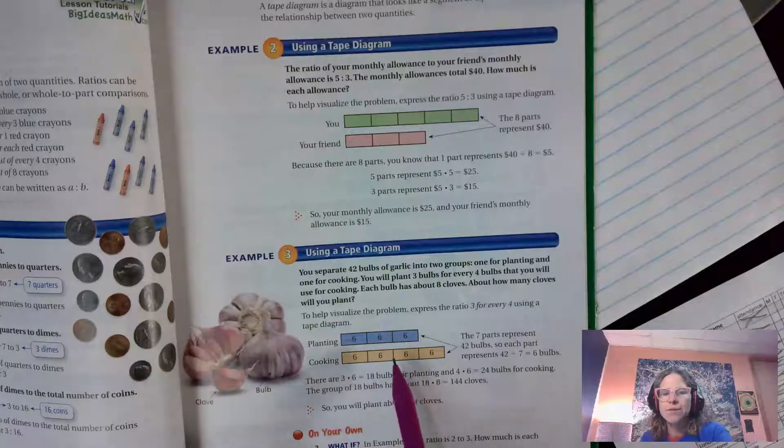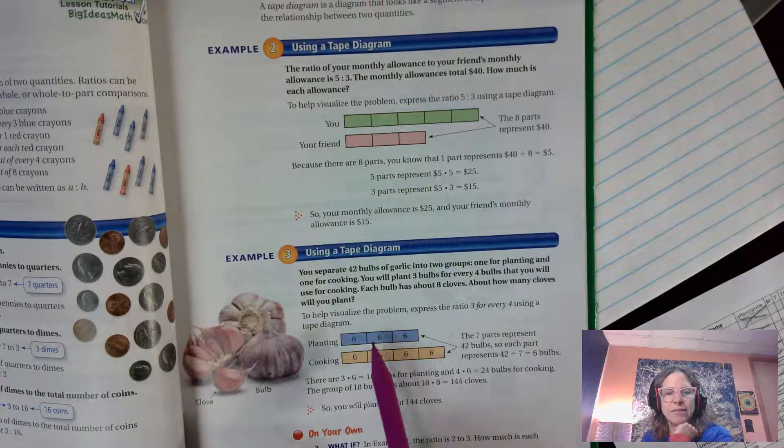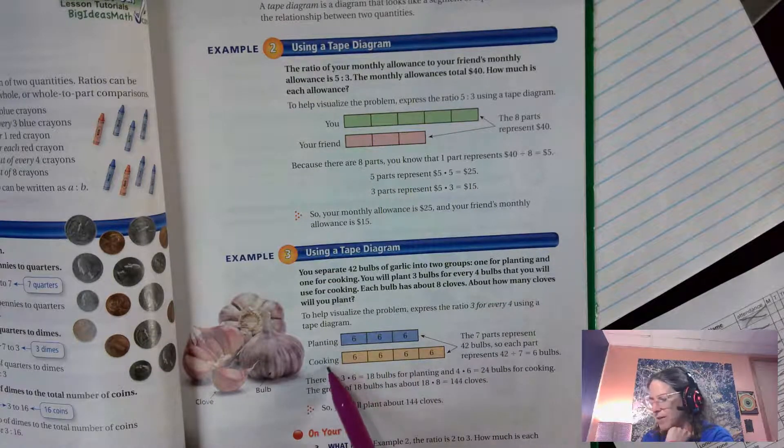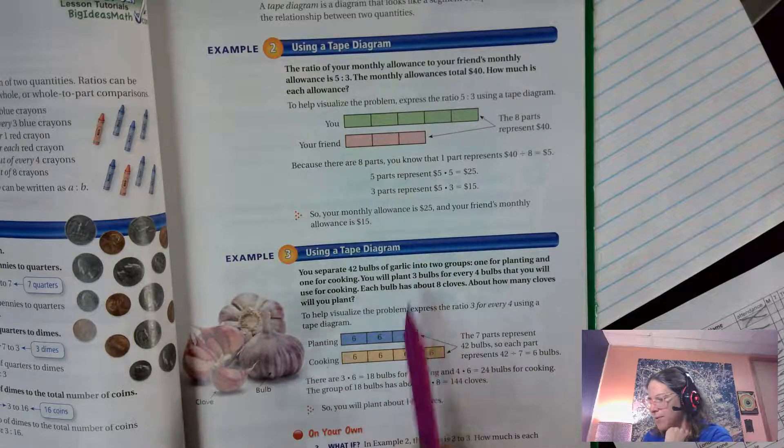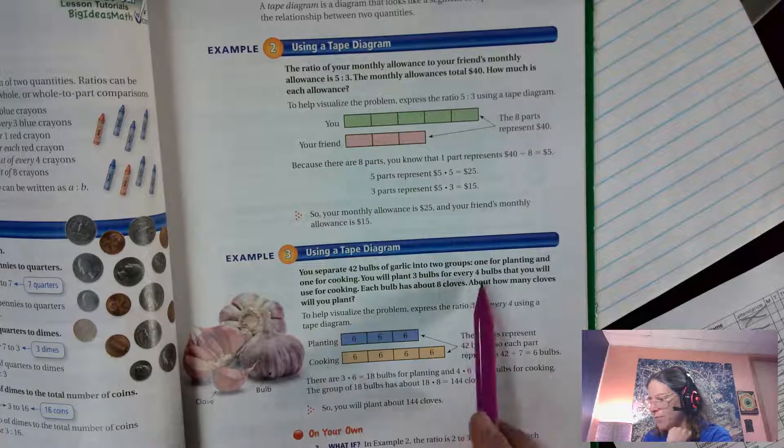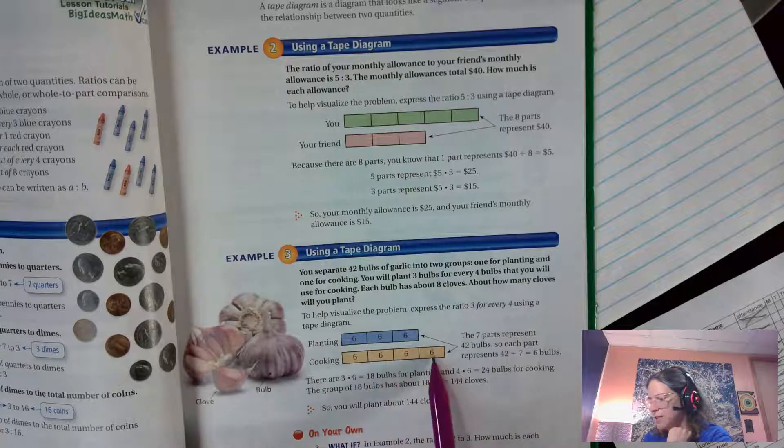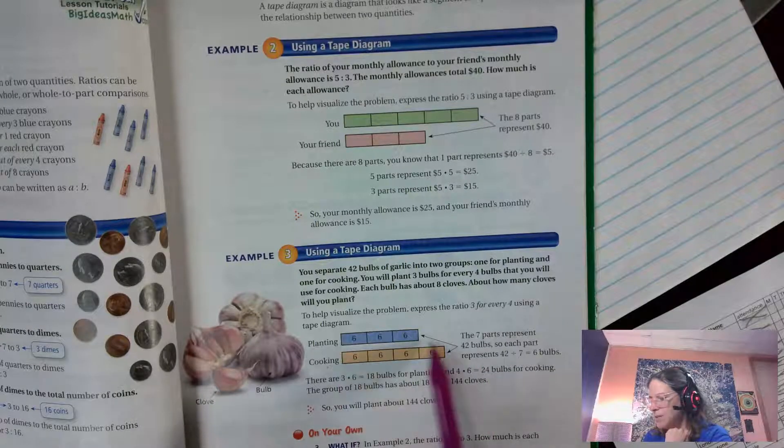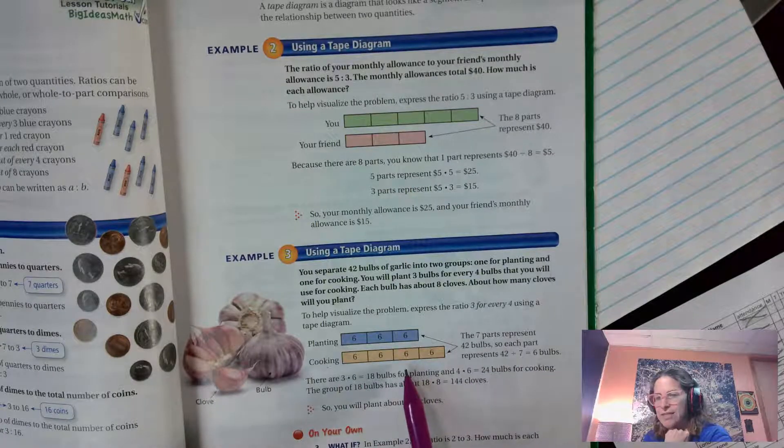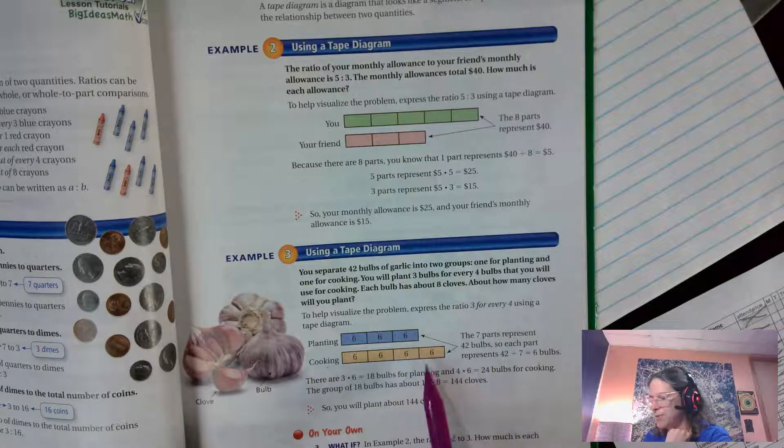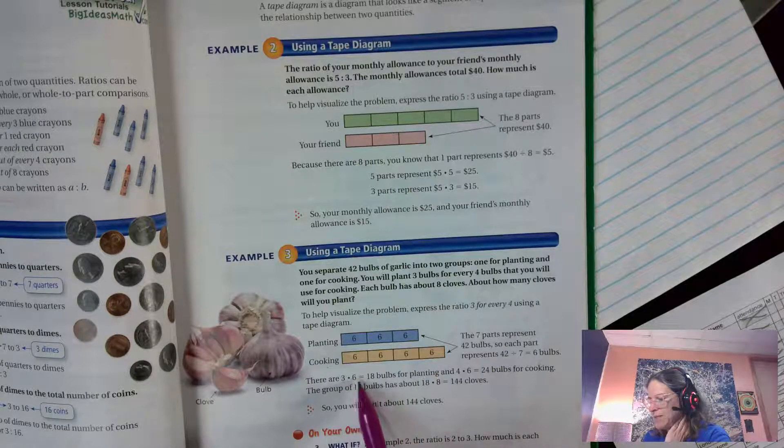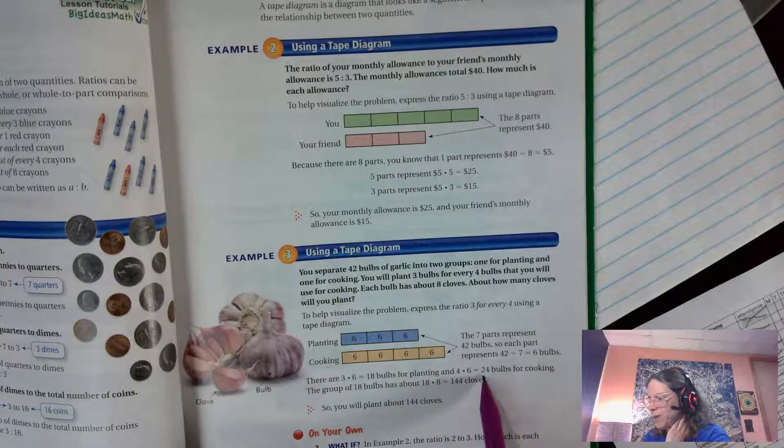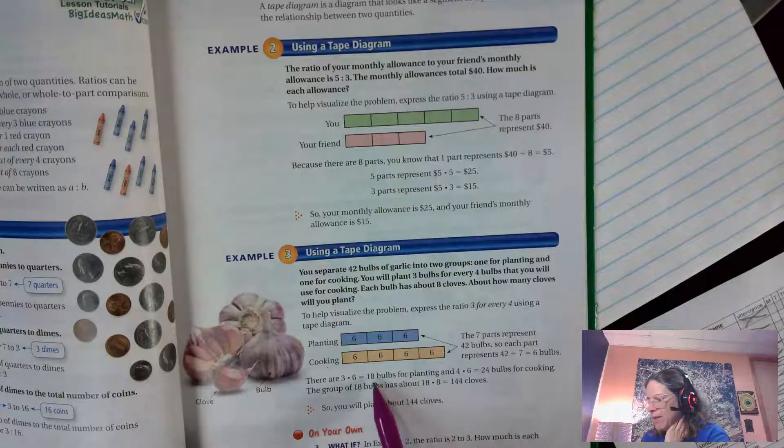So to help visualize this, I make my tape diagrams. I have my planting and I have my cooking. So planting, it said three bulbs, I have three sections. Cooking, I have four bulbs, I drew four sections. Then I took my 42, I divide it by these seven parts and I get six bulbs in each part. That's where that six came from. I get six bulbs in each part. So three times six is eighteen bulbs they use for planting, four times six is twenty-four bulbs that they use for cooking. Eighteen and twenty-four equals forty-two, so I know that that part's right.